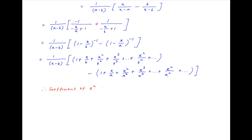This is equal to 1 upon (a minus b) multiplied by, in brackets, 1 upon b raised to the power n from the first expression, minus 1 upon a raised to the power n from the second expression.